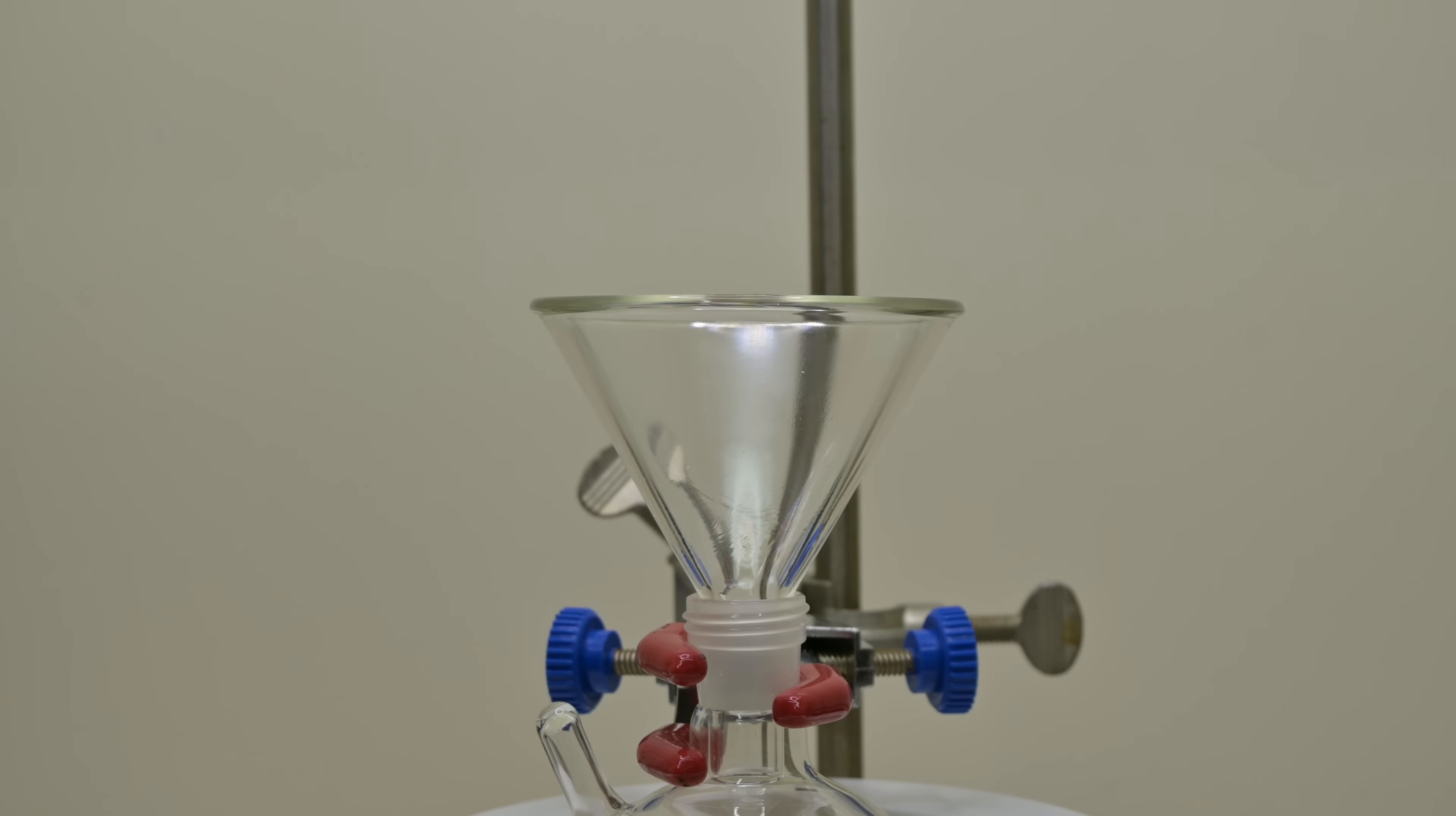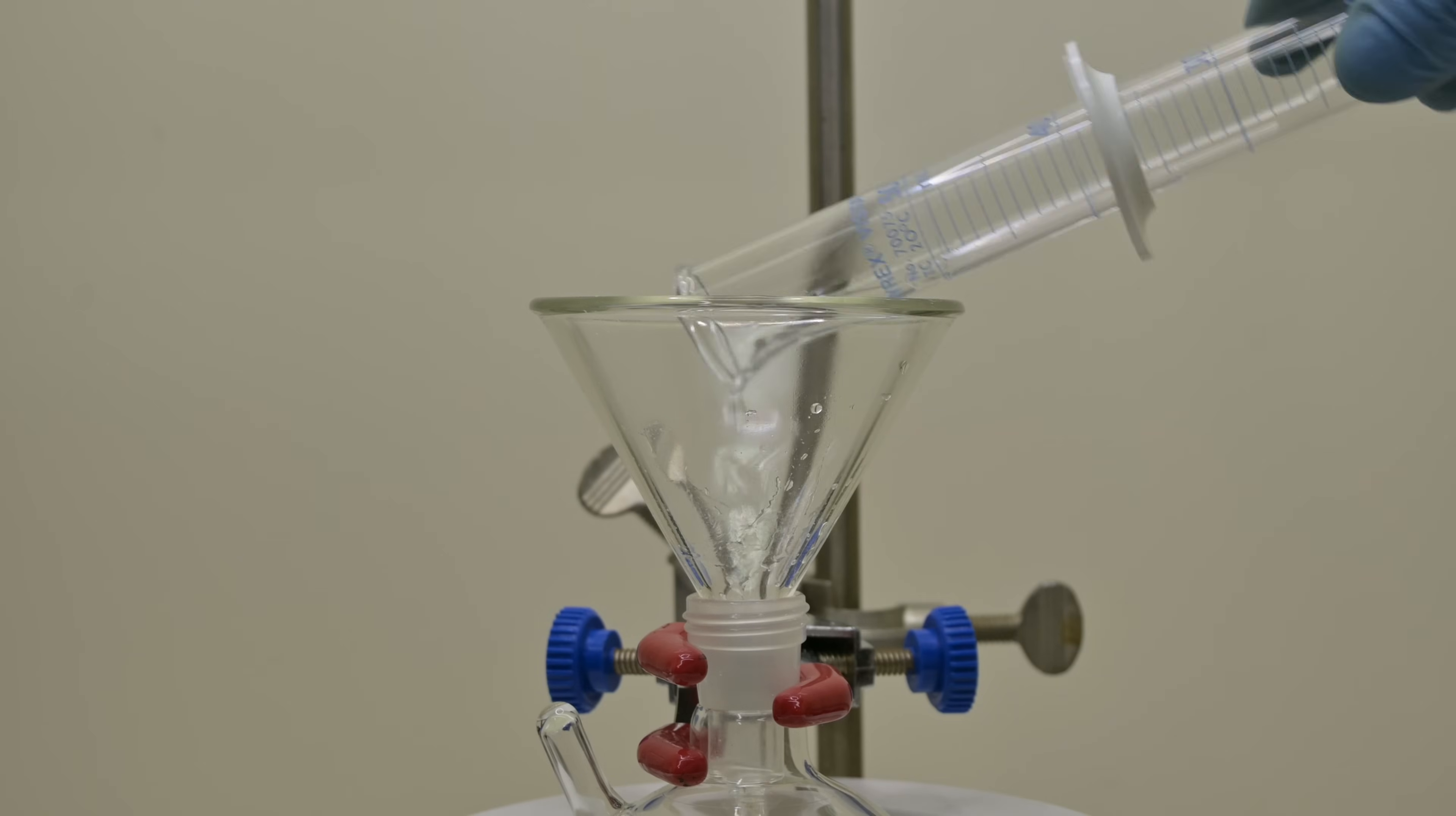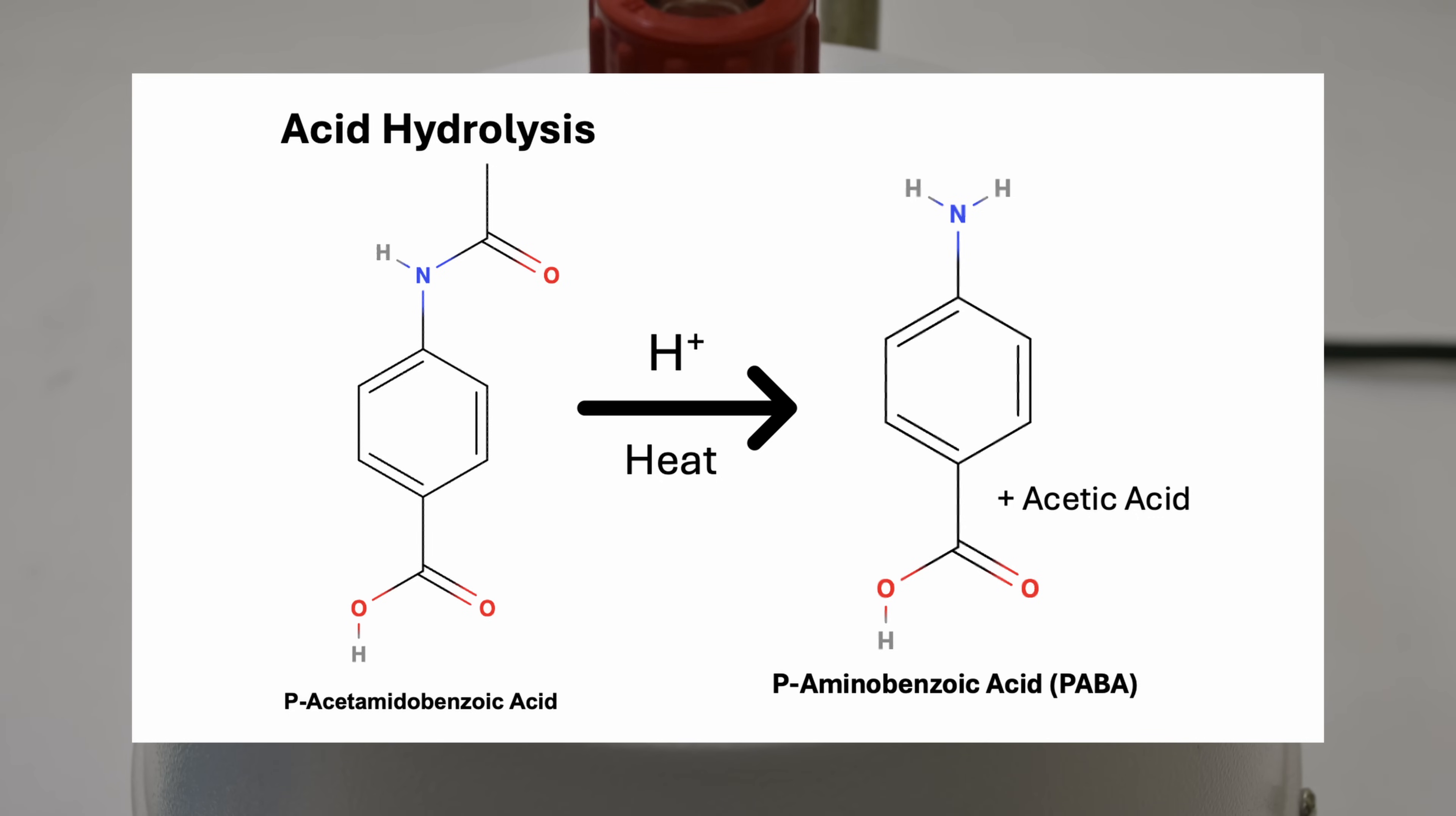I take the p-acetaminobenzoic acid I made earlier and weigh out the full amount for the next step. To break the amide bond and regenerate the free amine, I need a strong acid and some heat. So I transfer the solid into a 250 mL round bottom flask and add 33.5 mL of 18% hydrochloric acid. This solution was made by mixing equal volumes of concentrated HCl and water. The acid acts as a catalyst and provides the necessary protons to help cleave the amide during hydrolysis. I fit a reflux condenser on the flask. This lets me heat the mixture without losing any of the volatile compounds like HCl. I place the flask onto a heating mantle and gently boil the mixture for about 30 minutes. The heat helps drive the reaction to completion by providing energy needed to break the stable amide bond.